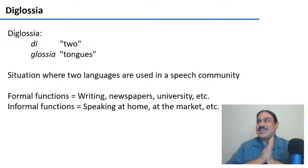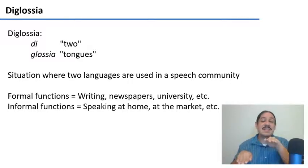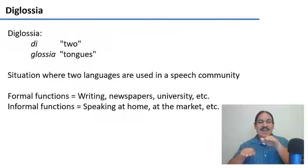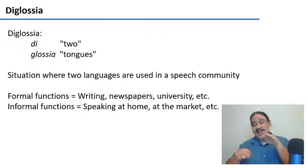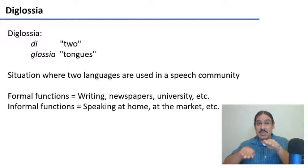There are societies where the decision has already been made for you — where there are settings where you need to speak one language and settings where you need to speak a different one. For example, you might have very formal settings like writing or being in a university classroom, and relatively informal settings like speaking at home with friends or at the market. If there is a strict separation where one language is used for formal situations and another for informal ones, we call this situation diglossia — the use of two languages in the community with a clear separation of when each should be used.